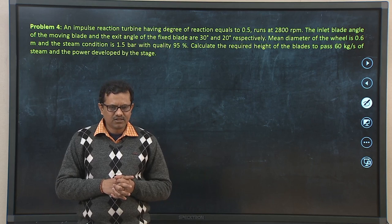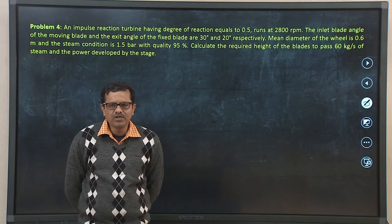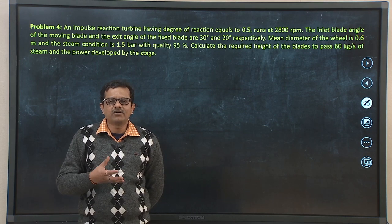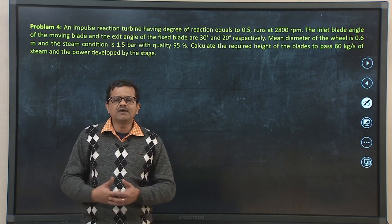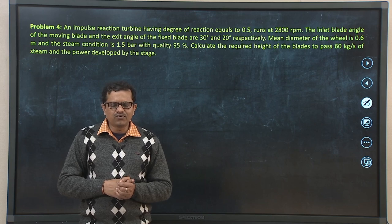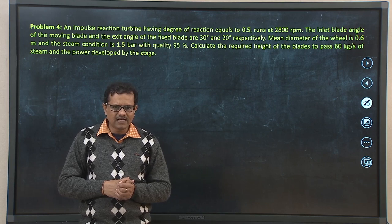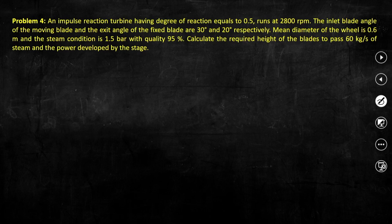Problem 3: An impulse reaction turbine with degree of reaction R equals 0.5 — sometimes called simply a reaction turbine to distinguish it from the pure impulse turbine. The turbine runs at 2800 rpm. The inlet blade angle of the moving blade is 30 degrees and the exit angle of the fixed blade is 20 degrees. Mean diameter of the wheel is 0.6 meter, and steam condition is 1.5 bar with quality 0.95. Calculate the required blade height to pass 60 kg/s of steam and the power developed.